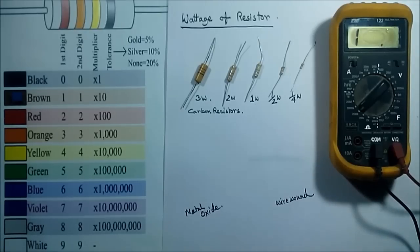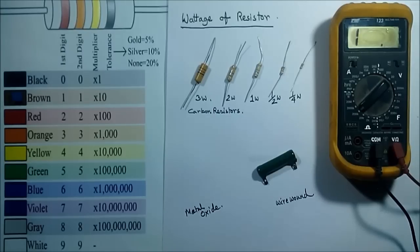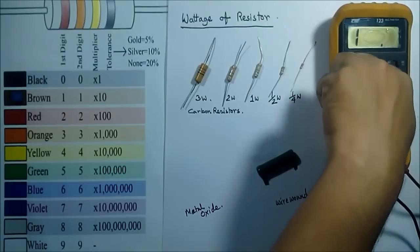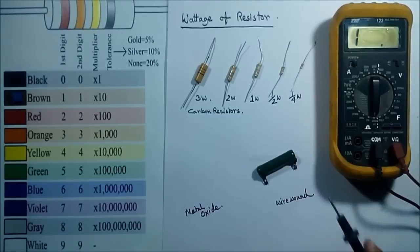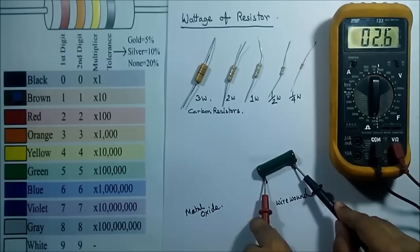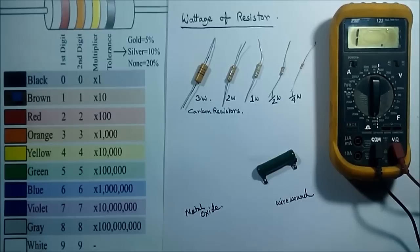This is the wire wound resistor having two terminals. We can measure the resistance of this wire wound resistor by multimeter. If we connect the two leads of the multimeter to its two terminals, the value showing is 2 ohm.